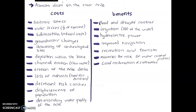So dams allow good crops in dry years — that's what I mean by drought control, because we can navigate the water through the dam. For example, in the case of the Aswan Dam, in 1972 and 1973 there was a huge drought, but thanks to the Aswan Dam, the crops could be saved.